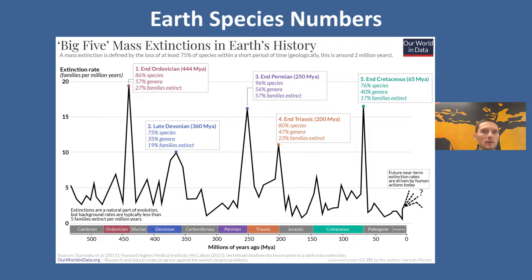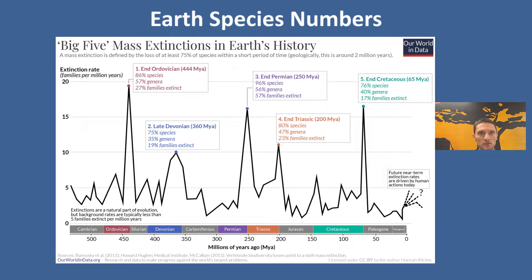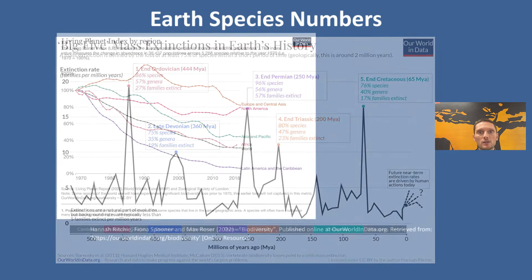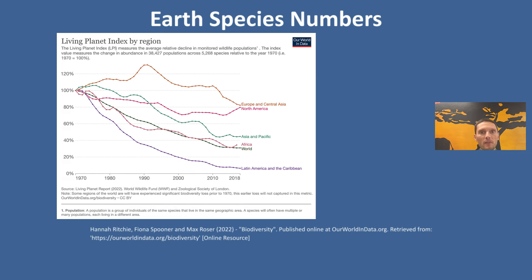When extinctions occur, they represent a reset of sorts, in which biodiversity generally increases after that extinction, and it changes the types of species present on the planet. After the Cretaceous extinction, there were many new bird and mammal species that developed following the extinction of the dinosaurs. Biodiversity has generally increased since the Cretaceous period, but as human activity and population growth have increased over time, that's starting to impact biodiversity.